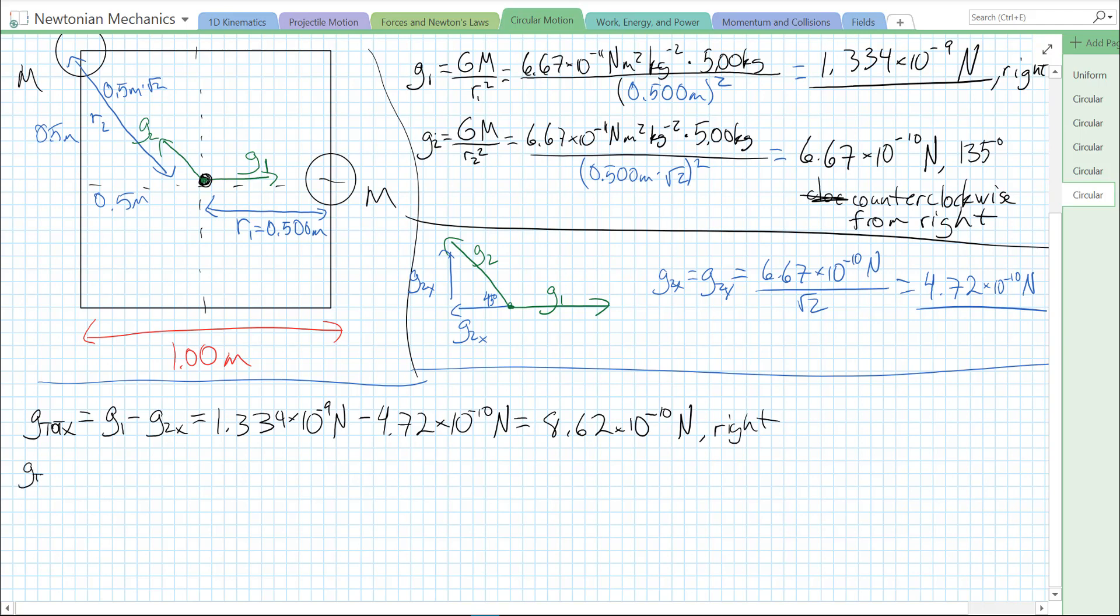G total y. Well, there's only one y component, so it's just the y component of G2y. It's going to be 4.72 times 10 to the minus 10 newtons.